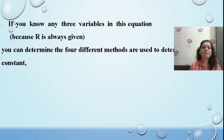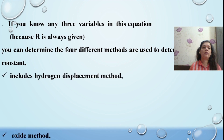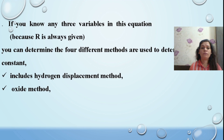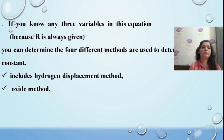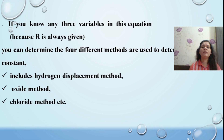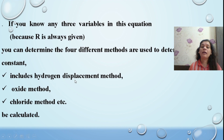There are different methods prescribed to find out the value of R: the hydrogen displacement method, the oxide method, the chlorine method, and by calculation. Today we are going to look into the hydrogen displacement method.